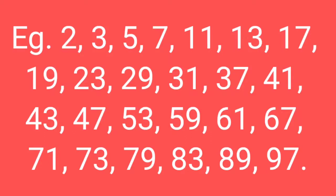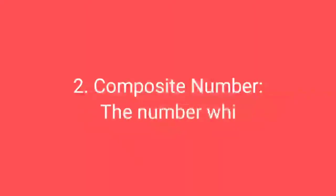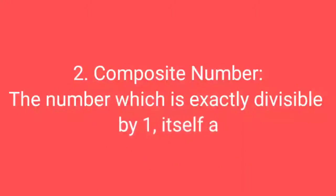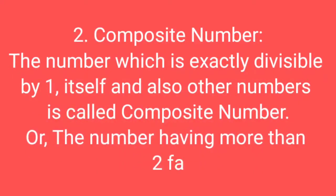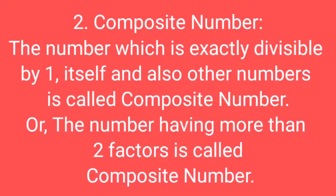Now let's know another most important concept: composite numbers. The number which is exactly divisible by one, itself, and also other numbers is called a composite number. You can also say: the number having more than two factors is called a composite number.